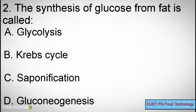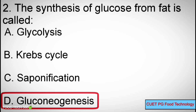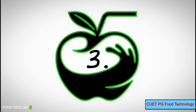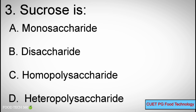Question Number 2: The synthesis of glucose from fat is called — Options A: Glycolysis, B: Krebs cycle, C: Saponification, D: Gluconeogenesis. Correct answer: D, Gluconeogenesis.